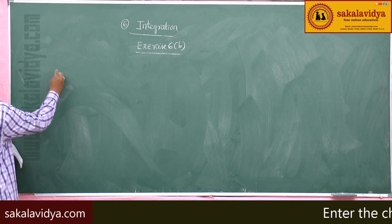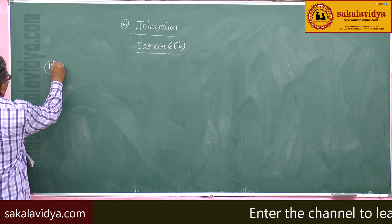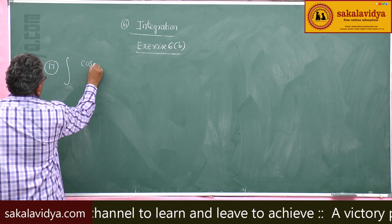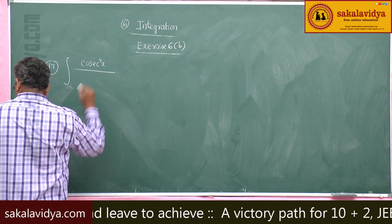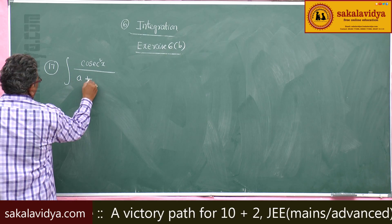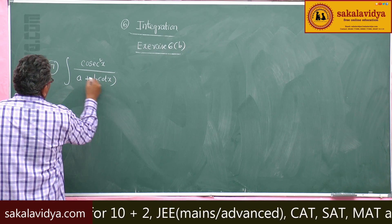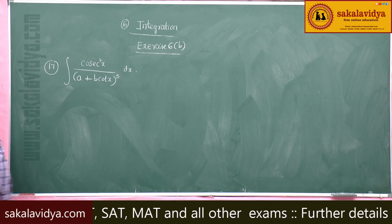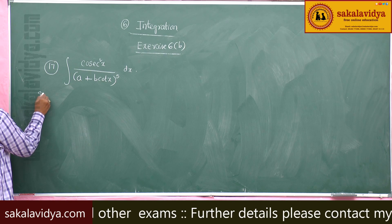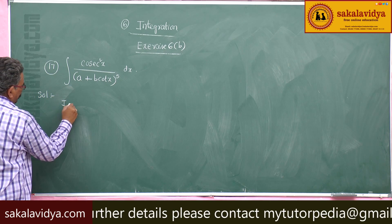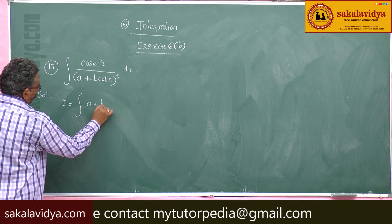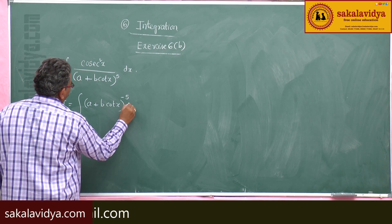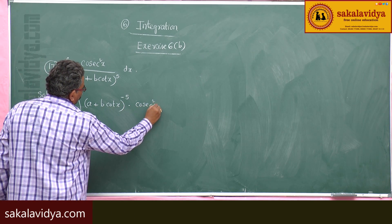Next, problem 17: evaluate the integral of cosecant squared x divided by (a plus b·cot x) to the power of 5, dx. The solution: I is equal to the integral of (a plus b·cot x) to the power of minus 5, multiplied by cosecant squared x dx.